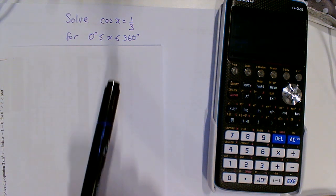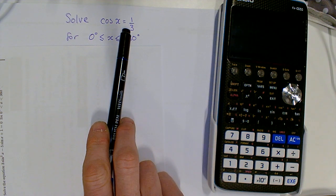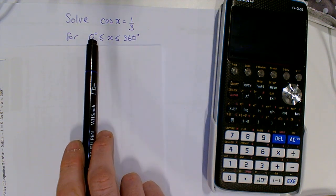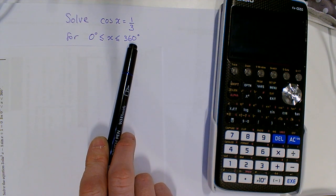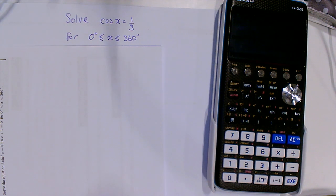Hiya 12s, I'm going to solve cos x equals one-third and give all possible answers in the range 0° to 360°. I'm going to show you how to use the CAST diagram and your calculator to do this.